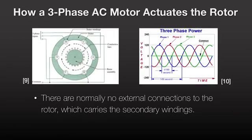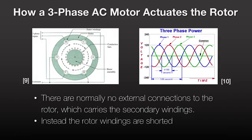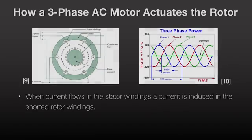There are no external connections to the rotor, which carries the secondary windings. The three-phase AC power inputs are connected directly to the stator pole pairs. All three phases of the AC power input have the same amplitude and frequency; they differ only in being 120 degrees out of phase with each other. The rotor windings are shorted together, a large electrical conductor rotating within a magnetic field. The AC induction motor gets its name from the fact that current is induced in the rotor windings by the magnetic field rotating around the stator.